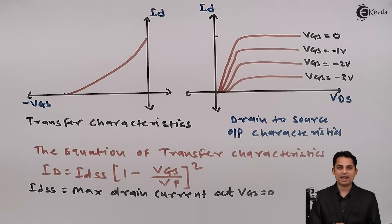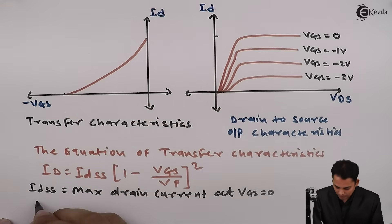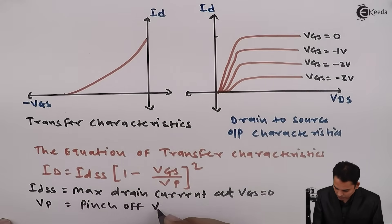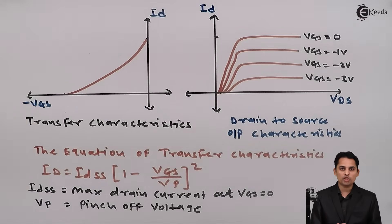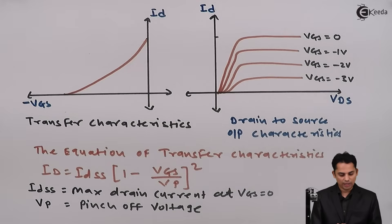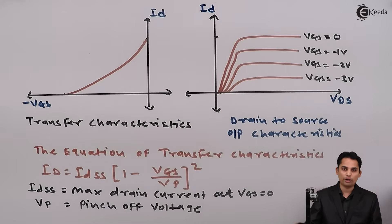IDSS is the maximum drain current at VGS equal to zero, whereas VP is called the pinch-off voltage. From this equation we can see that drain current ID changes as the square of input voltage VGS, hence JFET is called a square law device.